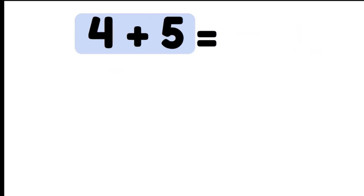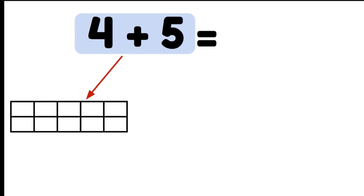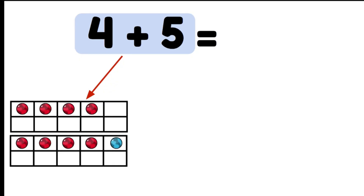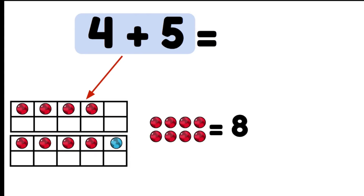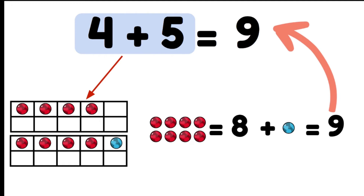Let's have a look at four plus five. Our closest double is double four. We know that four plus four is eight, but now we add the extra one, so eight and one more makes nine. Therefore, four plus five must be nine.